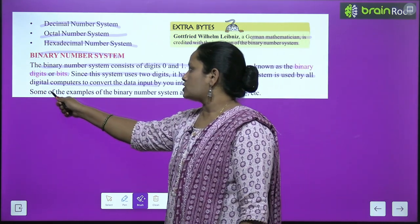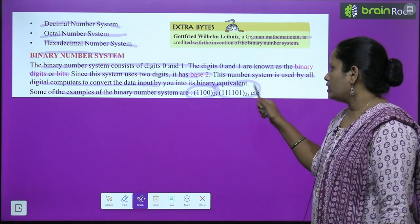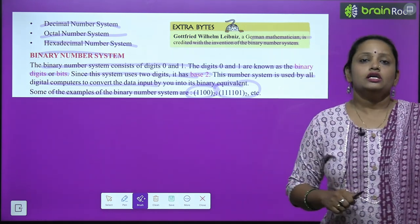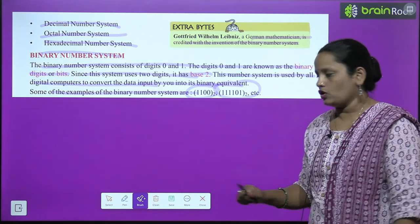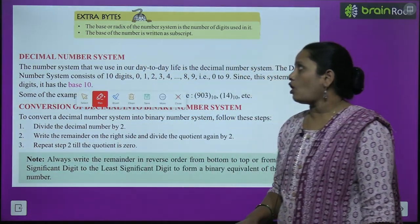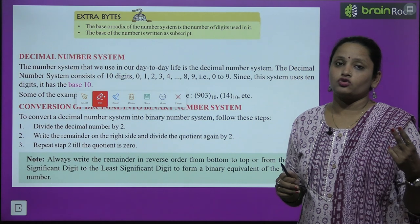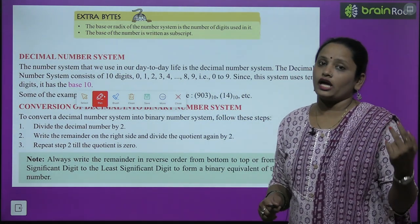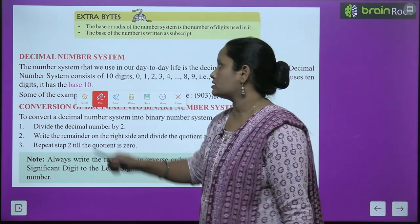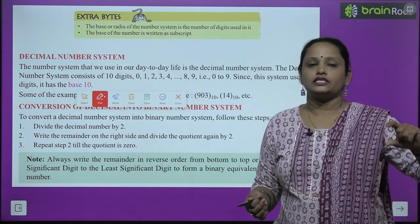Some examples of the binary number system are 1100 base 2 and 111101 base 2 — this is the computer's language. Extra bytes: the base or radix of a number system is the number of digits used in it. Here 0 and 1 are used, so the base is 2. If 3 numbers are used, the base is 3; if 4 are used, the base is 4. The base of a number is always written as a subscript — at the bottom right side of the number.